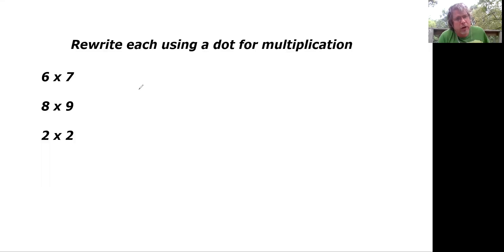Let's take a look at rewriting multiplication problems using a dot for multiplication. If I'm on paper, six times seven means multiplication using the x as our multiplication symbol. We can also write it as six and use a dot. So on paper, we can use a dot for multiplication.